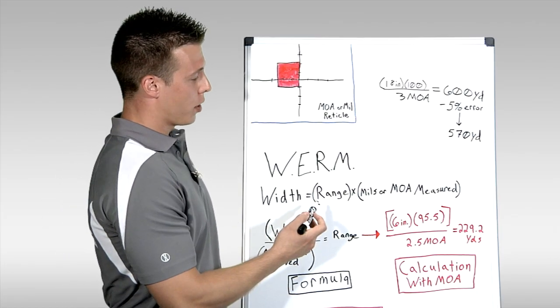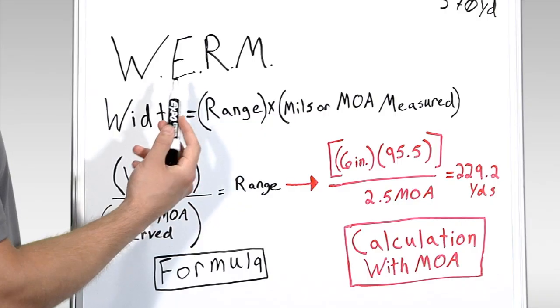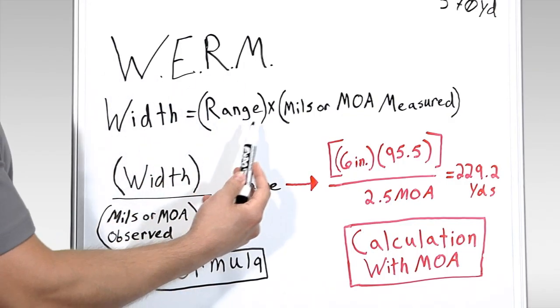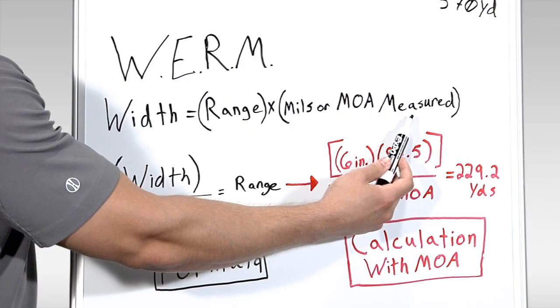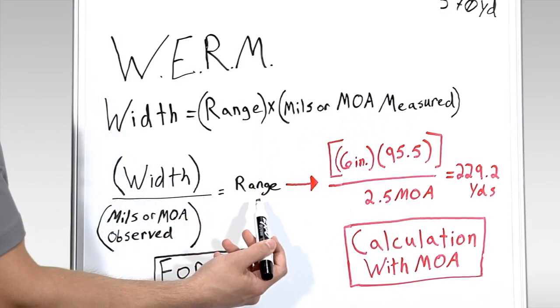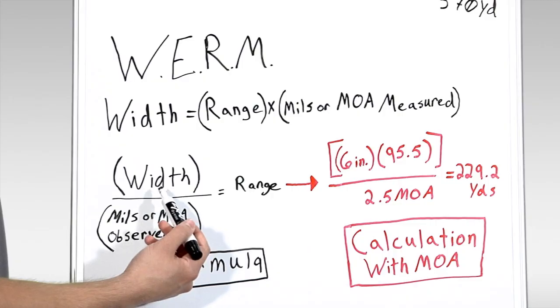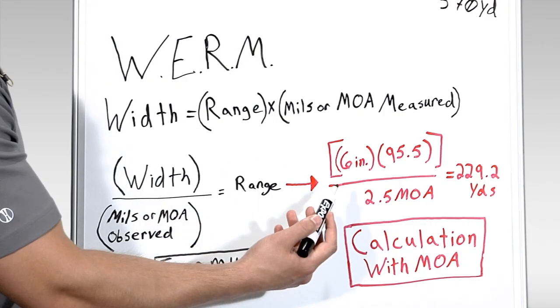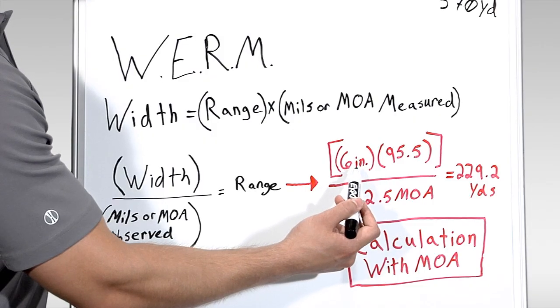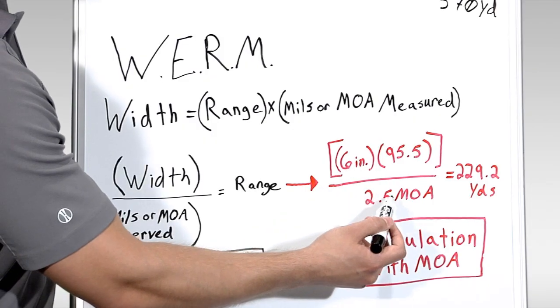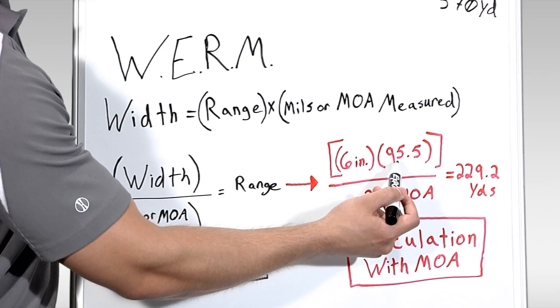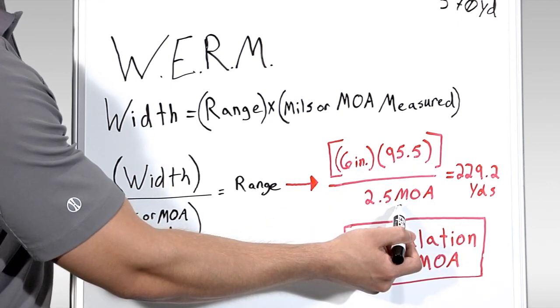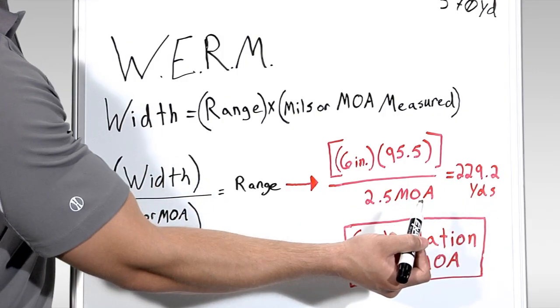So knowing what we know from looking through the riflescope, we use those values to plug into the WORM equation, where width equals range times mils or MOA measured. In this case, we want to isolate for range. So we get range equals width over mils or MOA observed. So using what we learned, we know our target is six inches wide, and we know that it filled out 2.5 MOA. Here we fill in 95.5. This number keeps our inches constant in relation to our minute of angle to give us an accurate yardage reading.